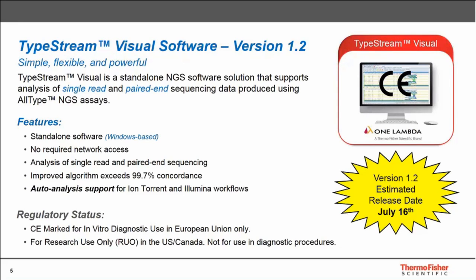The TypeStream Visual NGS Analysis Software has the ability to input and analyze single-read sequencing data from the IonTorrent platform, as well as paired-end sequencing data from the Illumina platforms. This software is a standalone application with no network access required. The algorithm we've designed allows us to exceed concordance rates of 99.7%. Version 1.2, which we expect to release next week on Monday July 16th, allows for an additional expanded feature we're referring to as Auto Analysis.